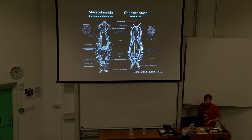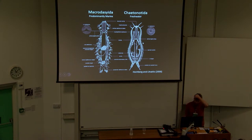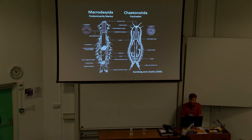This is what extant gastrotricha diversity looks like today. We have macrodasyids, which are primarily marine, and then chaetonotids, which are primarily freshwater. The main differences between these are the type of cuticular specializations they have, whether their pharynx is a Y-shape or an inverted Y, and the presence of pharyngeal pores.